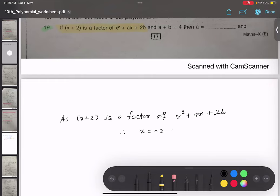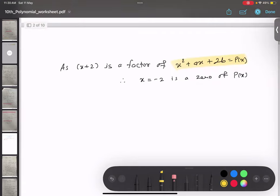x equals minus 2 is a zero of the polynomial. Make sense? Therefore, P bracket minus 2 equals zero. That means if I put minus 2 as a value of x, I will get the answer as zero.